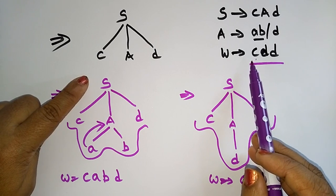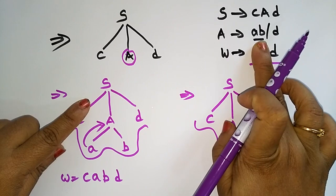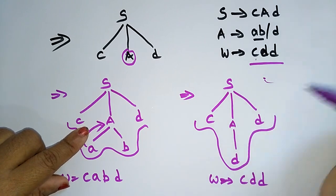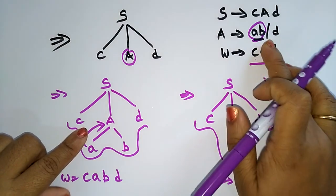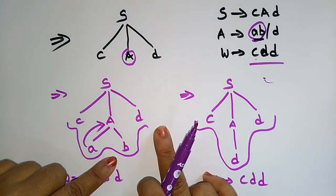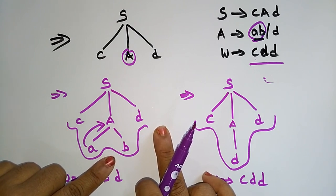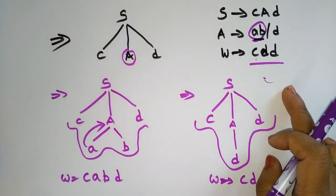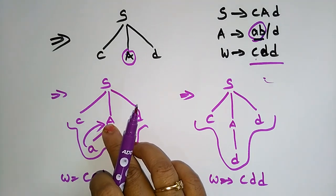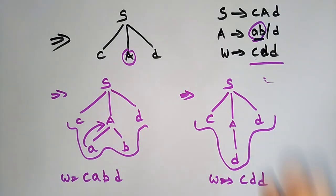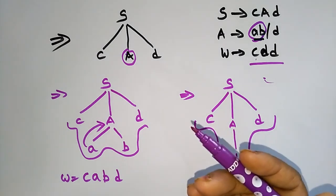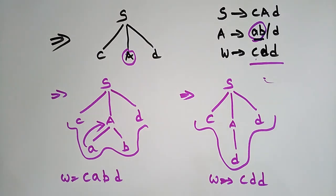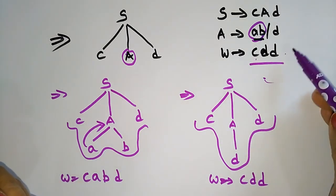Here, A is a non-terminal with two productions: ab and d. First, we take the first production ab, which results in cabd — that does not match the given string cad. So we backtrack to the previous step where A was expanded and try the alternative production d. This gives w = cad, which matches the given string. That is the main concept of backtracking: you backtrack until the result of the tree matches the input string.